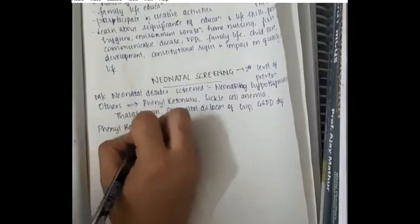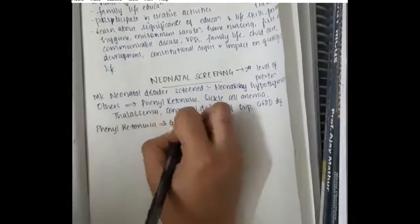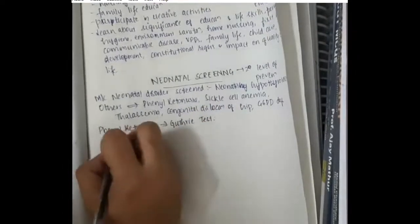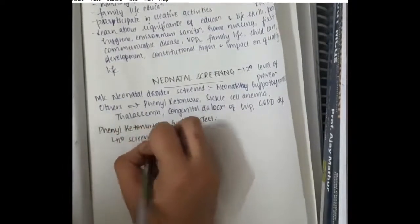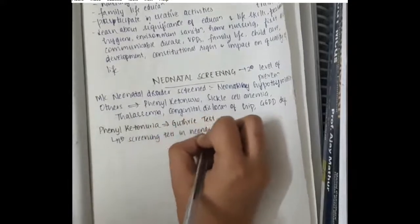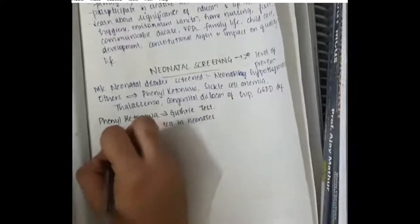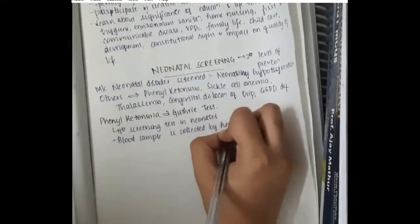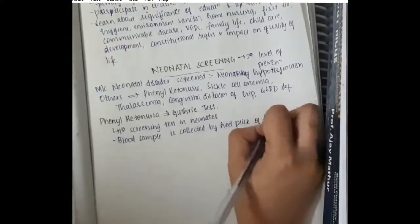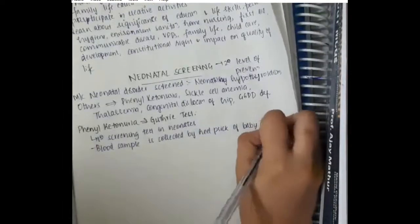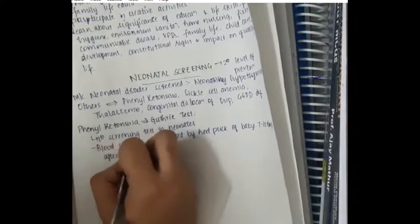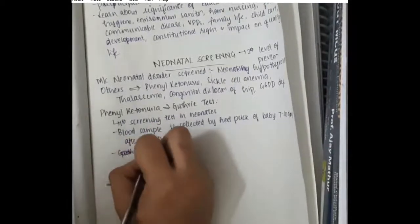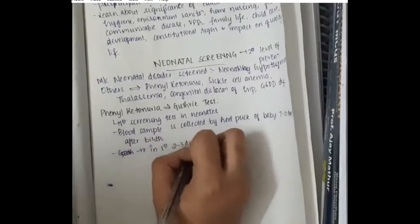First, we will learn some points about phenylketonuria or Guthrie test. This phenylketonuria or Guthrie test is the first screening test which was done in neonates. Here, the blood sample is collected by heel prick of the baby 7-10 days after birth. 7-10 days after birth with heel prick, we will collect the blood samples and this is negative for the first 2-3 days of life.